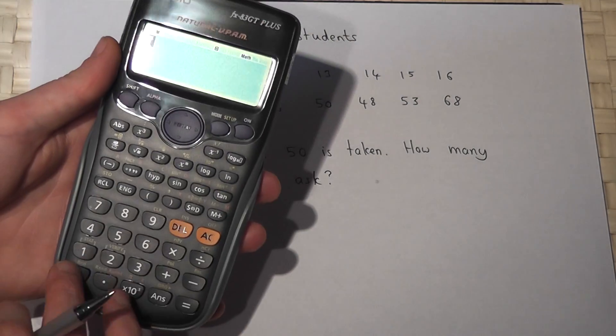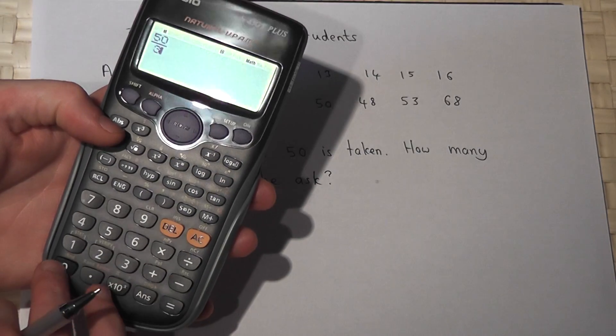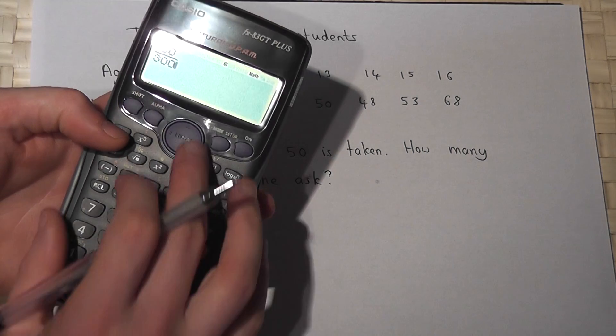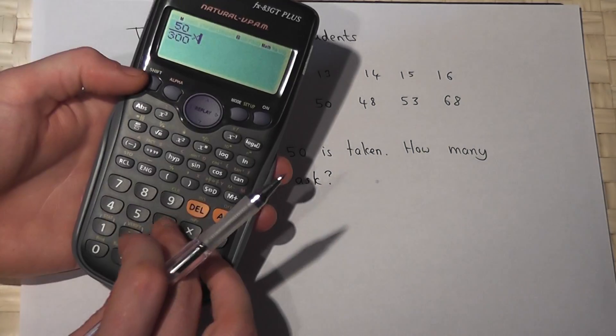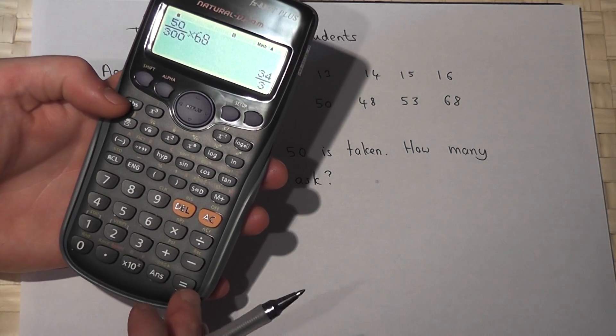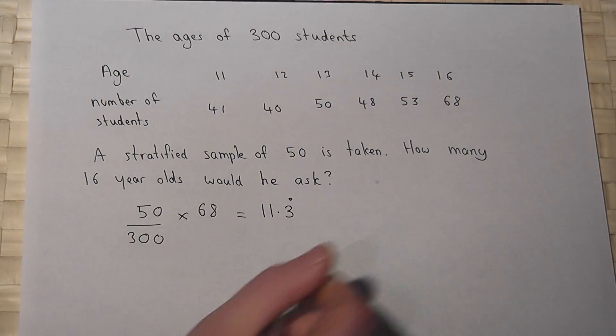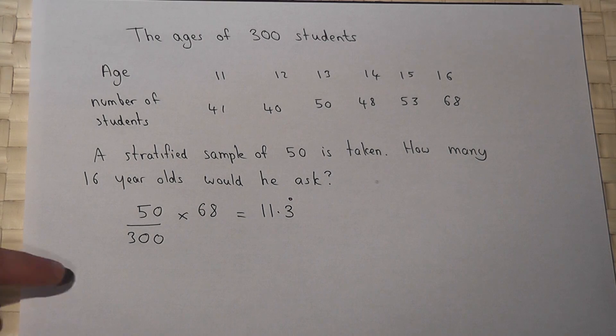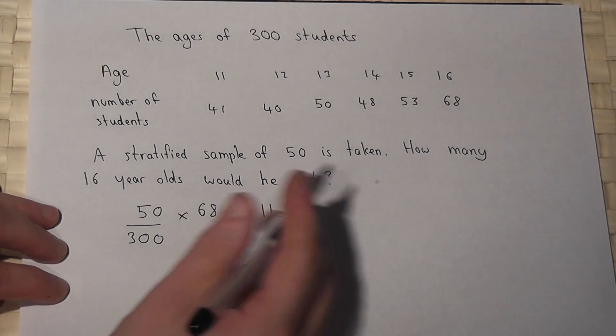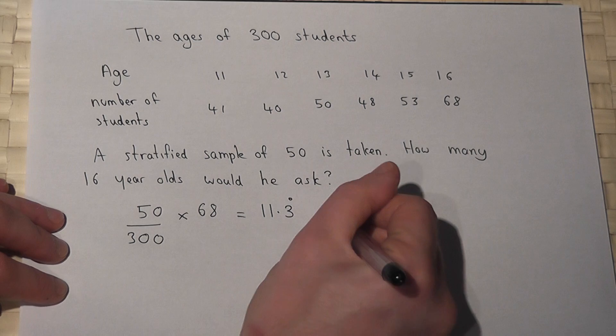We get 50 over 300, and if we times that by the total number, then we get 11.3 recurring. So Ian would need to ask 11.3 recurring students. Now we can't ask point three recurring, so let's round that down.